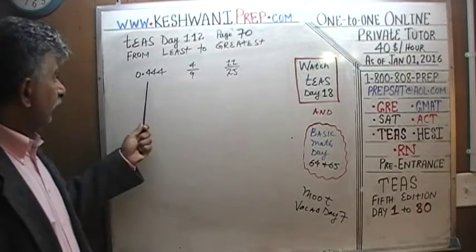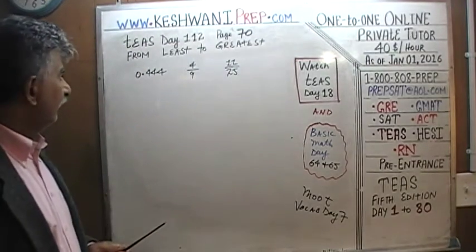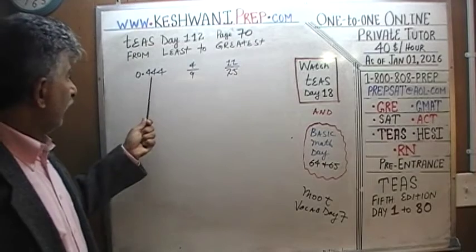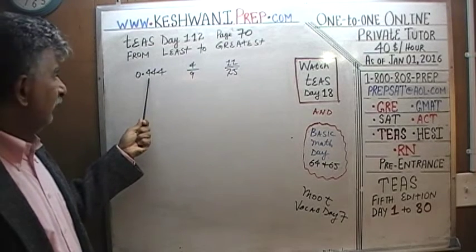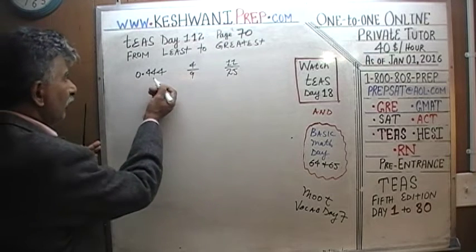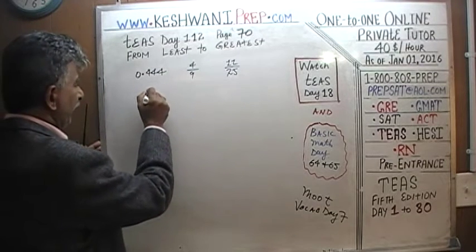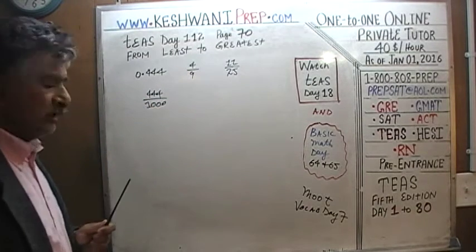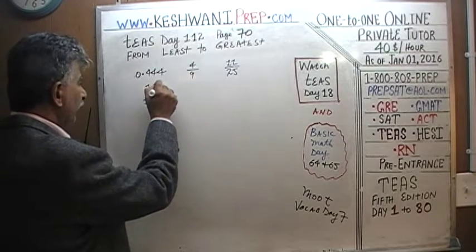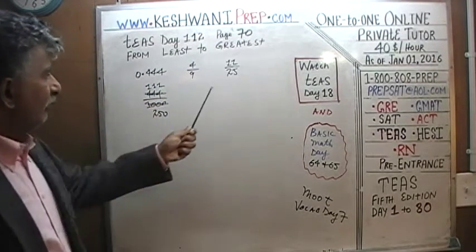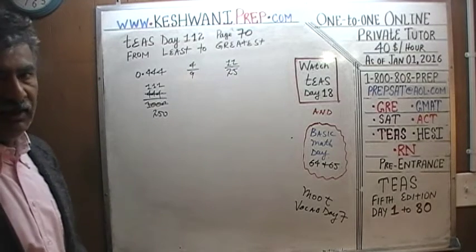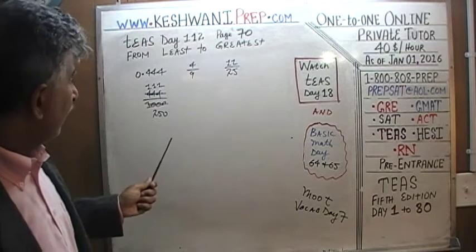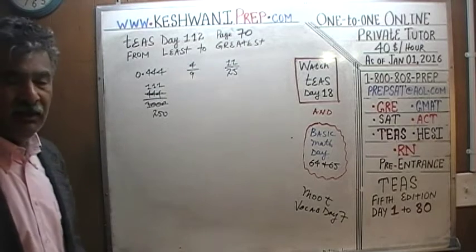This is a decimal, and these are fractions. We either have to convert everything to decimal or to fractions. Trying to convert everything to fractions isn't going to get us anywhere — even if we convert 0.044 to 44/1000, which simplifies to 11/250, we still have a 9 in 4/9, and finding a common denominator of 250 and 9 would be a huge number.